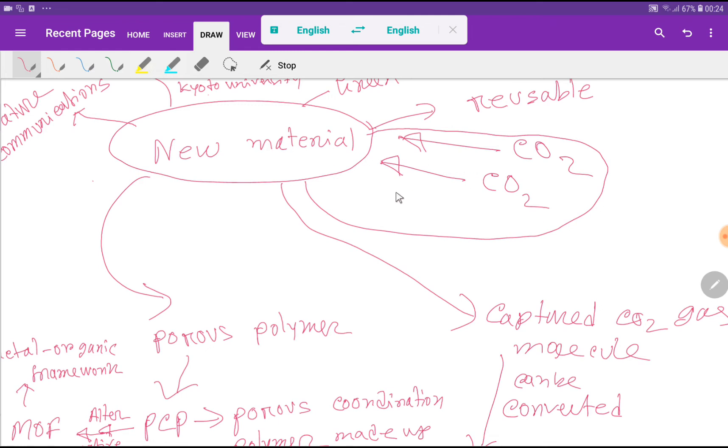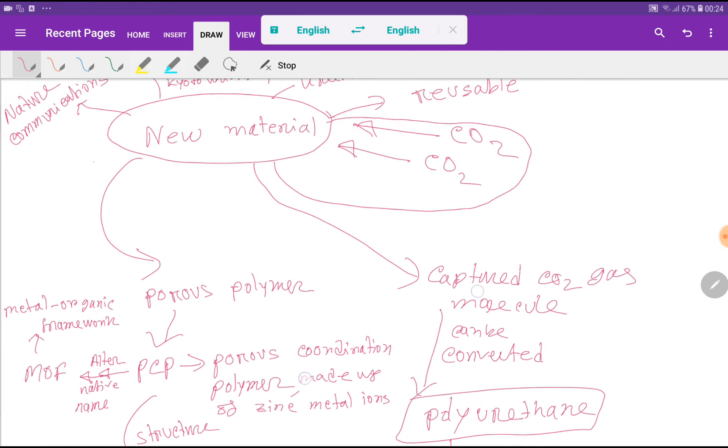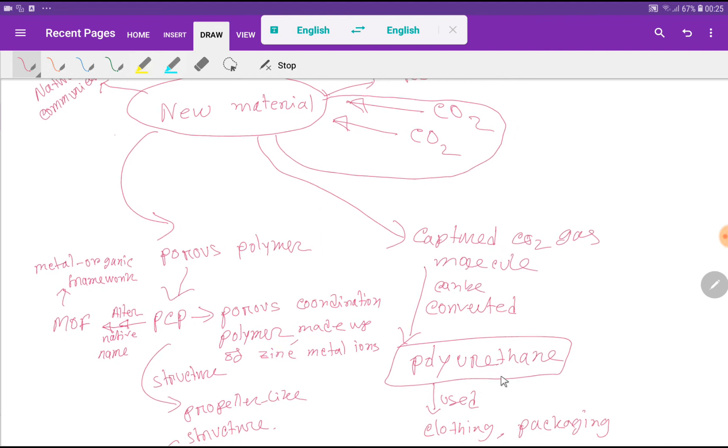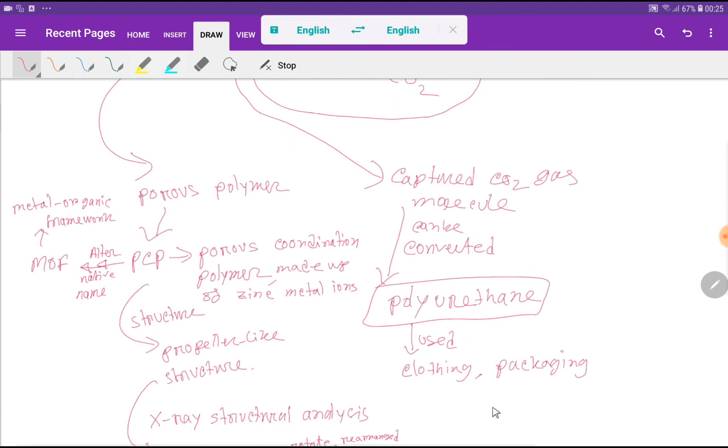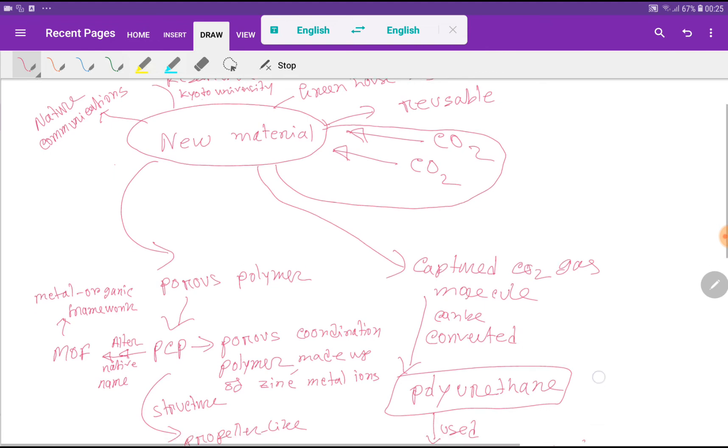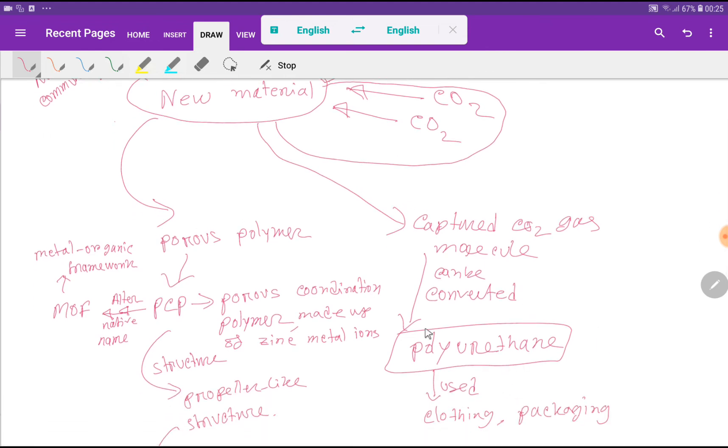...then we can convert the captured carbon dioxide gas molecule into polyurethane. This is a polymer. And we know that polyurethane can be used in clothing and packaging. That is, our atmosphere's carbon dioxide can be used in clothing and packaging.